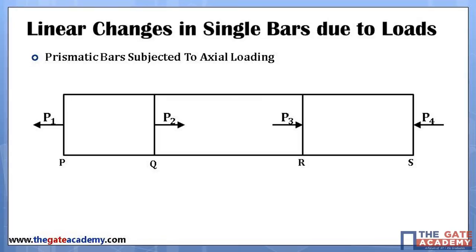If you take this single prismatic bar experiencing loads in some particular fashion, we see that different sections of the bar are given names P, Q, R, and S, and four loads are acting at different sections. At P, load P1 acts in the negative x-direction; at Q, load P2 acts in the positive x-direction; at R and S, loads P3 and P4 act in positive and negative x-directions respectively. We have to find out total elongation and stresses induced inside the material.